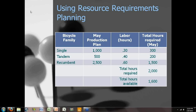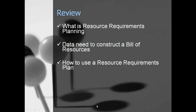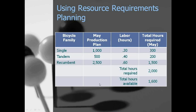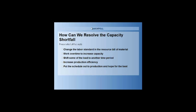This happens all the time in manufacturing. The next thing we do in resource requirements planning is try to figure out how to resolve this imbalance. We need 2,000 hours worth of labor but only have 1,600 hours. So I'm going to put you to work again with another poll. This poll asks: how can we resolve the capacity shortfall? You've got five options — you can pick one, none, or all. Read through them and put your selections over the next minute or so.